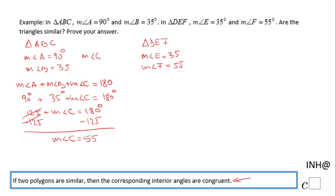Now let's do the same for triangle DEF. We write a similar statement: the measure of angle D plus the measure of angle E plus the measure of angle F equals 180. We have the measure of angle D, which we need to find, plus 35 degrees plus 55 degrees equals 180.